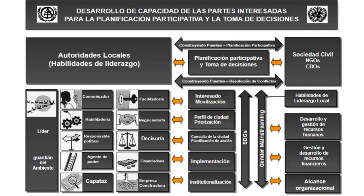Stakeholder capacity development for participatory planning and decision-making: the process includes stakeholder mobilization, profiling of the city or area you're working in, a consultation at city or site level, implementation, and institutionalization. Each of these steps — or the whole process — is supported by the SDGs as a guide, and there should be gender mainstreaming throughout.